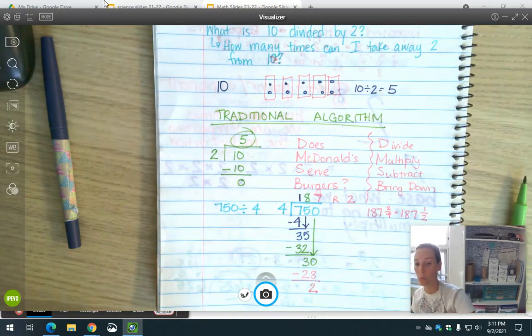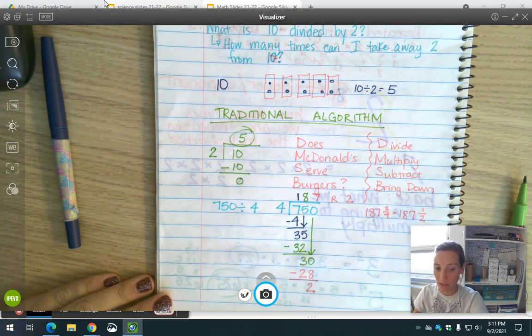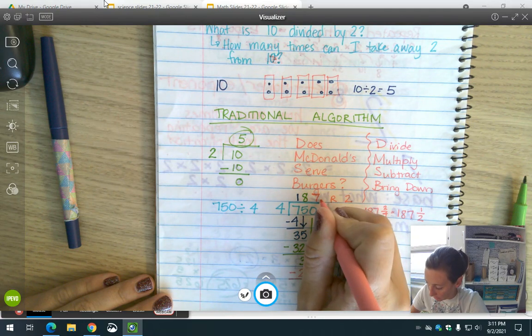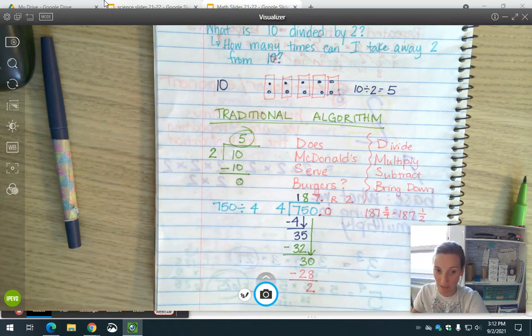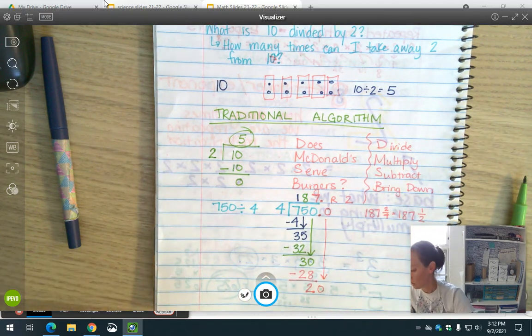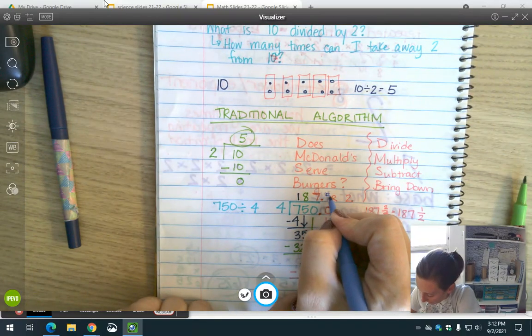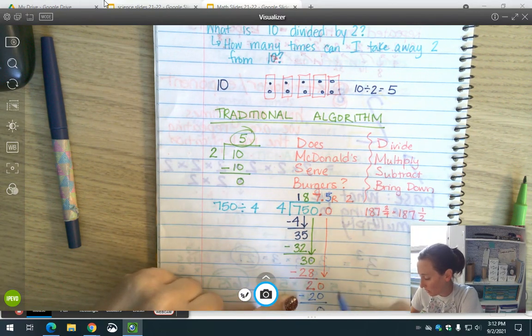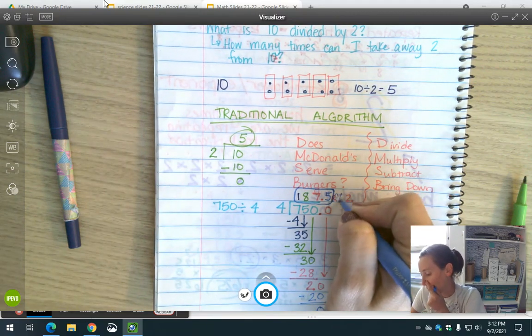I want to show you just to get you thinking on this. This is what you would do though as we get going and we do decimals. You would add a decimal right here and you'd start adding zeros because 750.0 is the same as 750. Then you can bring down that zero. How many times does 4 go into 20? 4 goes into 20 five times. 5 times 4 is 20. Subtract, 20 minus 20 is 0. Bring down, I don't have anything left to bring down, so the precise answer would be 187.5.